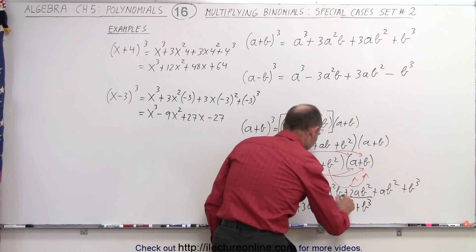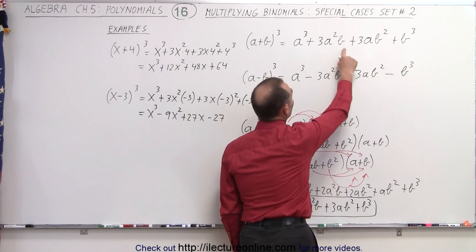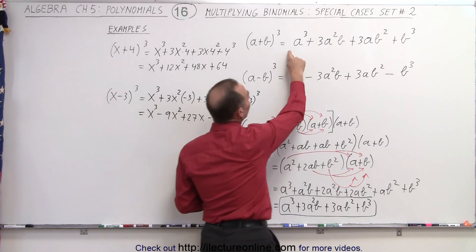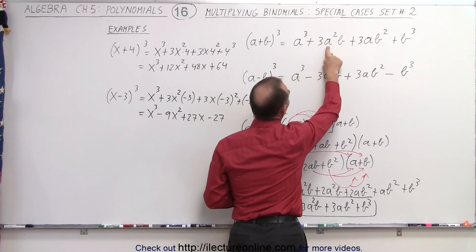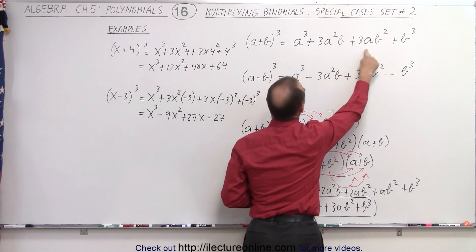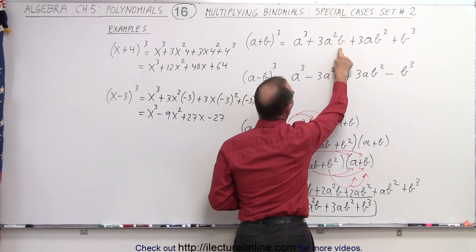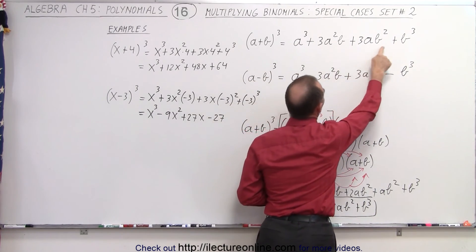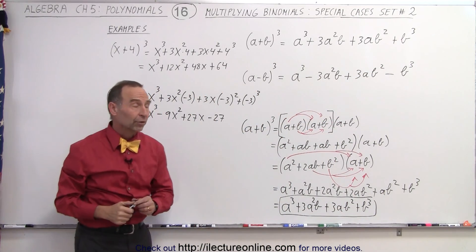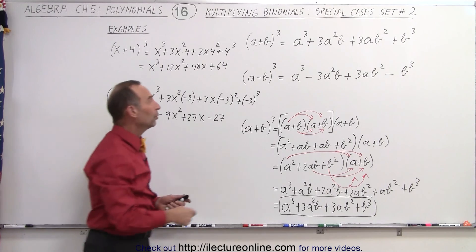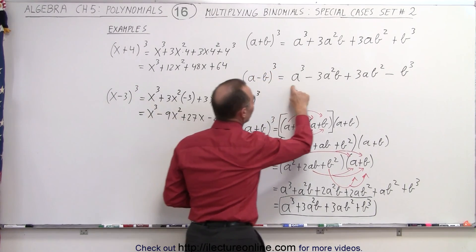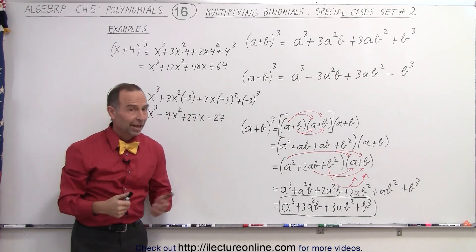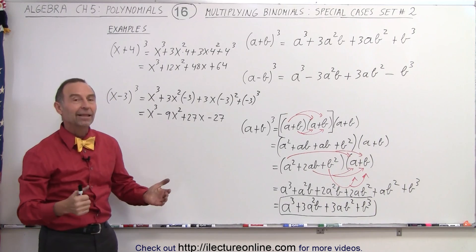Notice we get the exact same result as before. You can bypass all that work by simply realizing it's going to be descending orders for the first term — a cubed, a squared, a, and a to the zero power — and ascending orders for the second term — b to the zero, b to the first, b squared, b cubed — and the coefficients are going to be 1, 3, 3, and 1. The same thing will happen when you take a minus b quantity cubed; you'll end up with the same result but with alternating minus signs. Go ahead and try that, and that is how it's done.